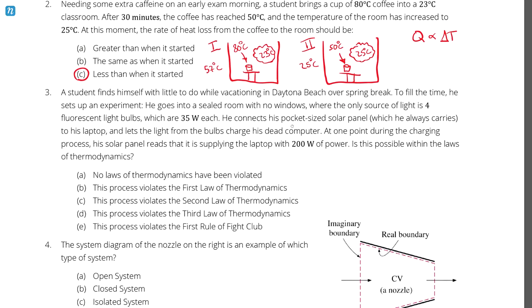Question number three. A student finds himself with little to do while vacationing in Daytona Beach over spring break. Must be an engineering student. To fill the time, he sets up an experiment. He goes into a sealed room with no windows where the only source of light is four fluorescent light bulbs, which are 35 watts each. He connects his pocket-sized solar panel, which he always carries, to his laptop and lets the light from the bulbs charge his dead computer. At one point during the charging process, his solar panel reads that he is supplying the laptop with 200 watts of power. Is this possible within the laws of thermodynamics?